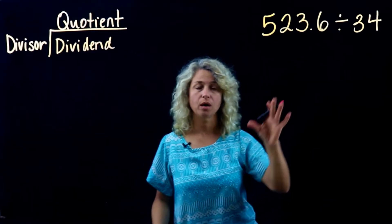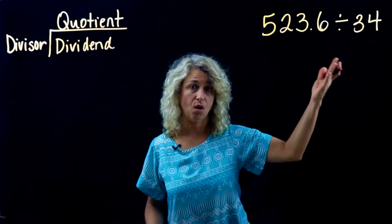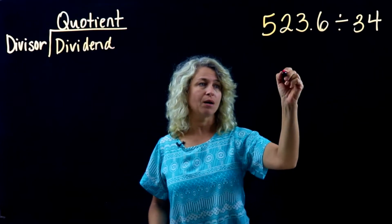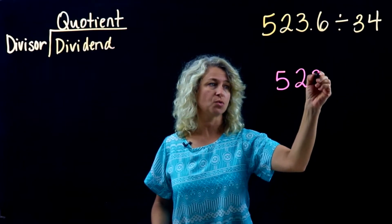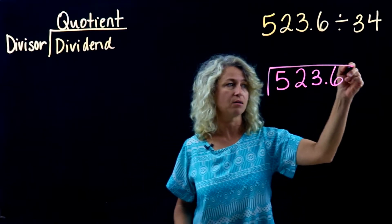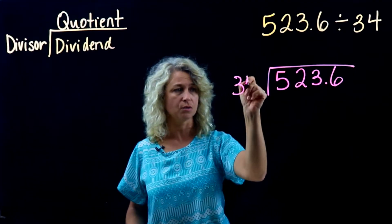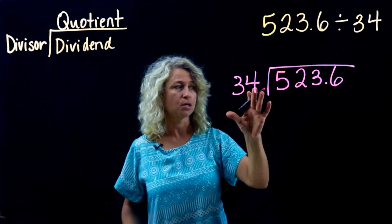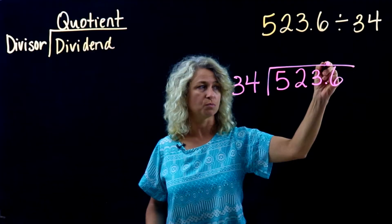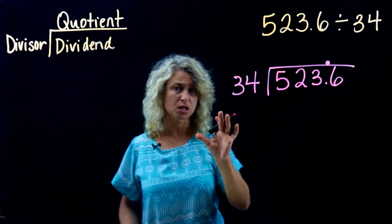Let's look at another example. As you can see, this next example the numbers, the digits, are a little larger. We'll write five hundred twenty-three and six tenths inside the house, this is our dividend. Thirty-four is our divisor. It's a whole number, so our decimal placement will just move straight up.